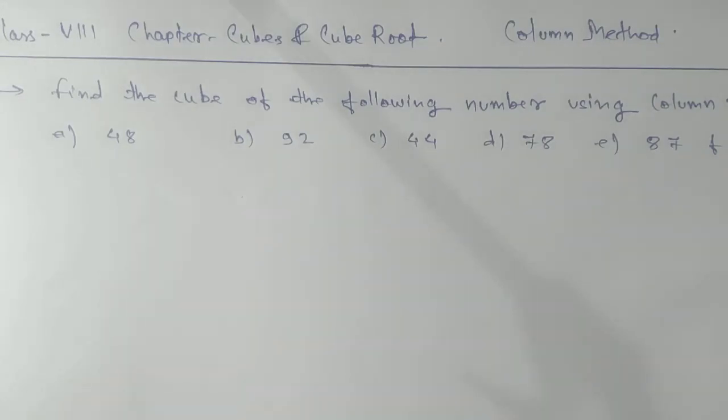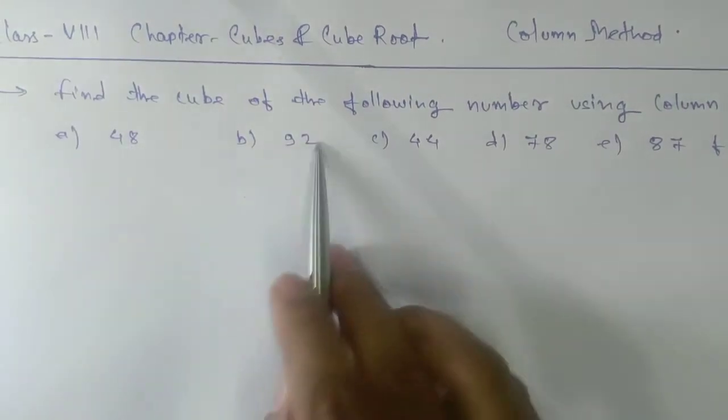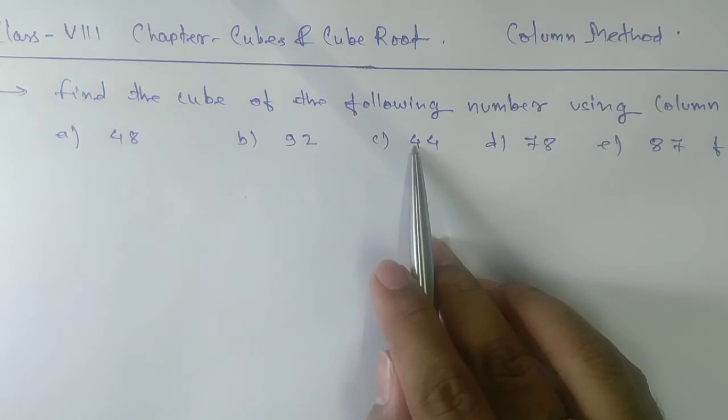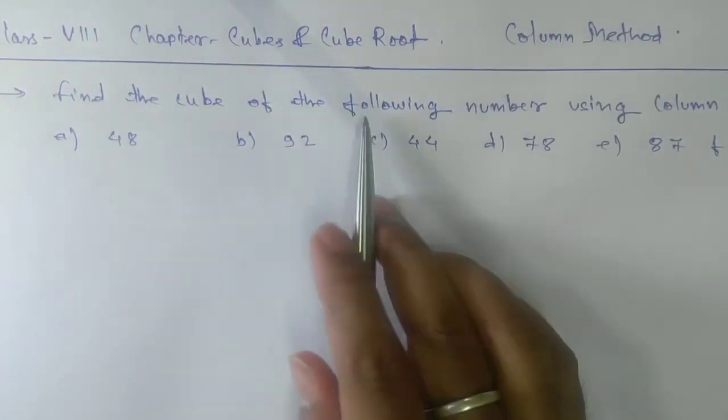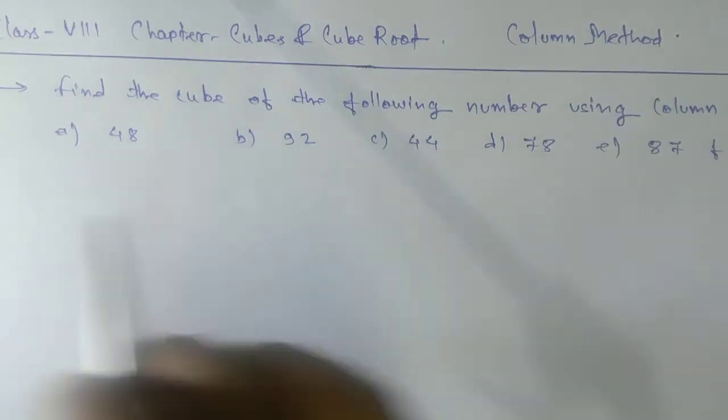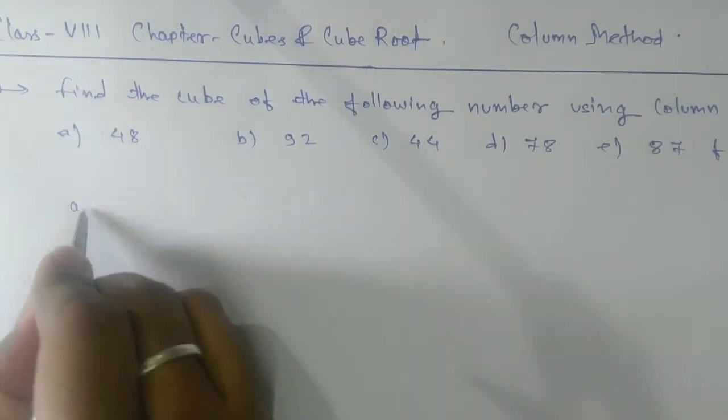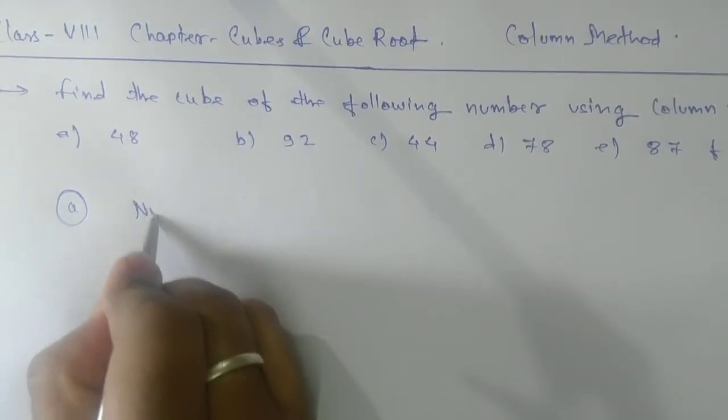Namaste students, today we are going to see how to find a cube of a number using column method. Here you can see all the digits are two-digit numbers. That means the limitation is here for column method: you can apply only for two-digit numbers.